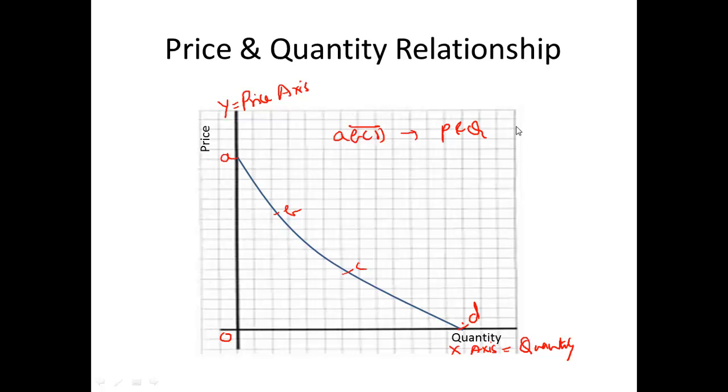This assumes that the price of related goods, income (both current and future), and tastes and preferences remain constant. The curve ABCD gives the relationship between P and Q, assuming that Px, Py, Y, and T are constant. Now let us consider two points on this curve, B and C.